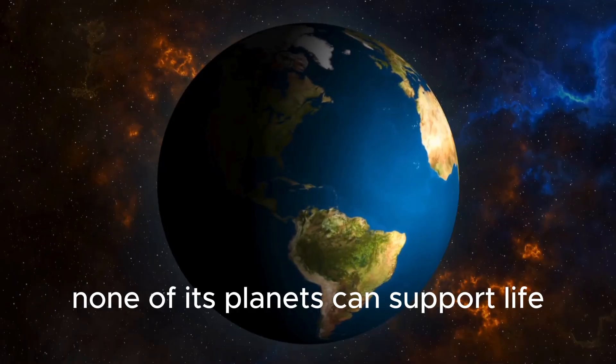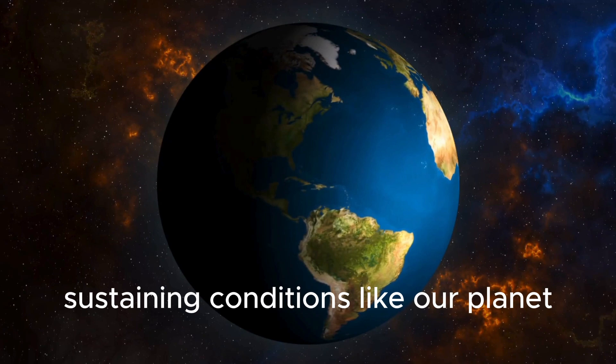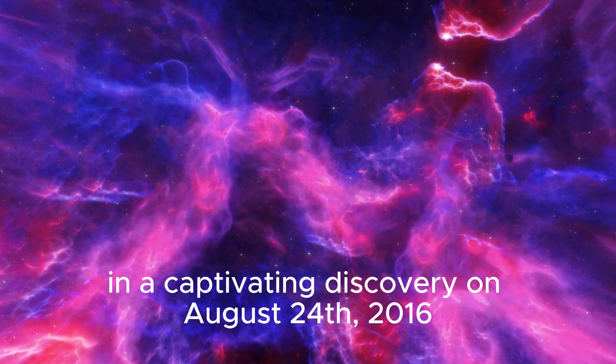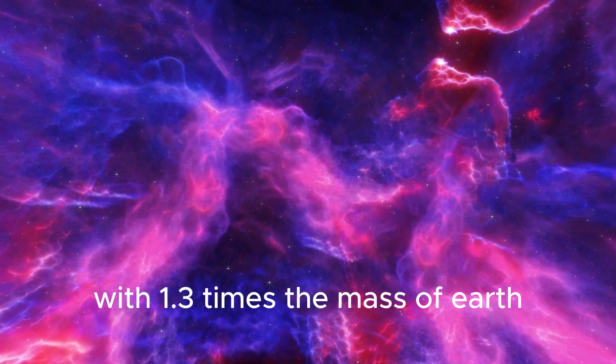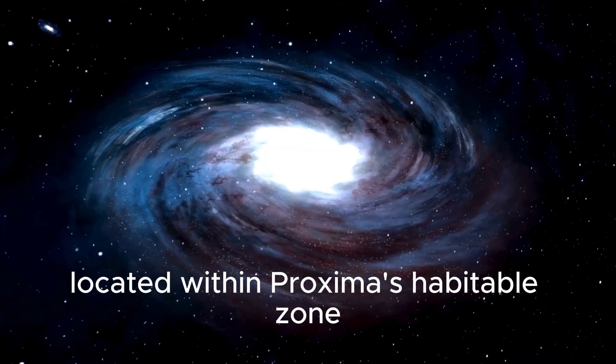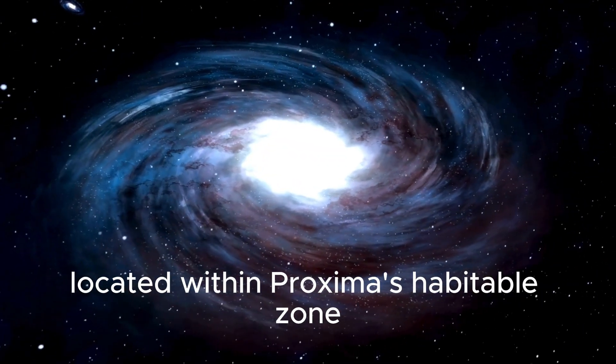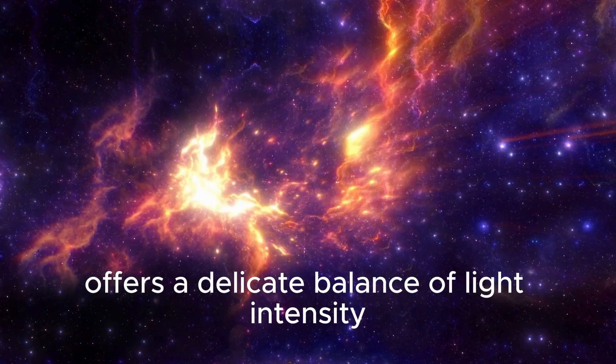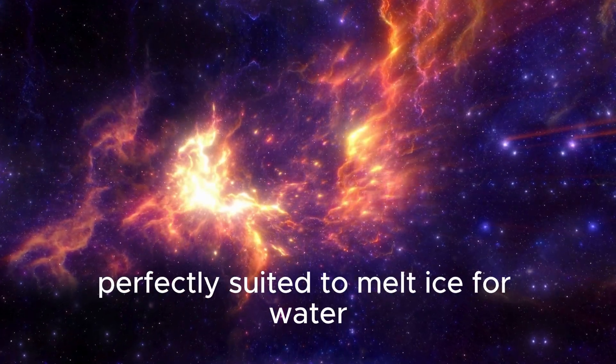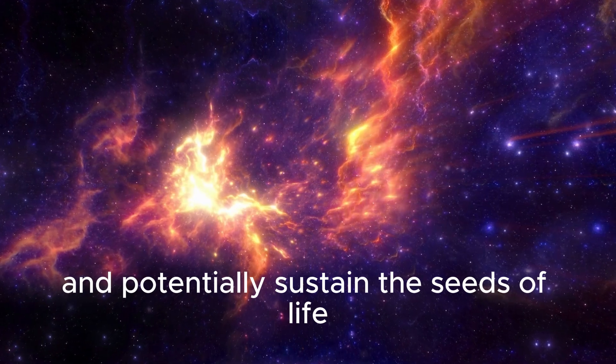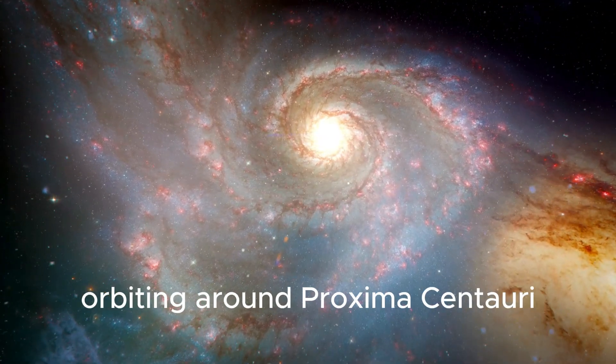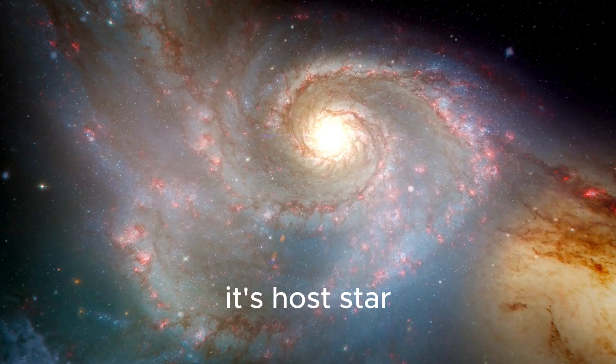In a captivating discovery on August 24, 2016, cosmologists found a planet with 1.3 times the mass of Earth located within Proxima's habitable zone. The Goldilocks-like region offers a delicate balance of light intensity, perfectly suited to melt ice for water and potentially sustain the seeds of life. Proxima b is a galactic conundrum, orbiting around Proxima Centauri, its host star.